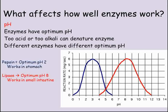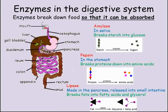Let's look a bit more at the role enzymes play in the human digestive system. Enzymes help to break down food so it can be absorbed as it travels through the small intestine. Amylase is found in saliva and it breaks down starch into sugars. We've just looked at pepsin and how its low optimum pH means it works in the stomach — its role is to break down protein into amino acids.